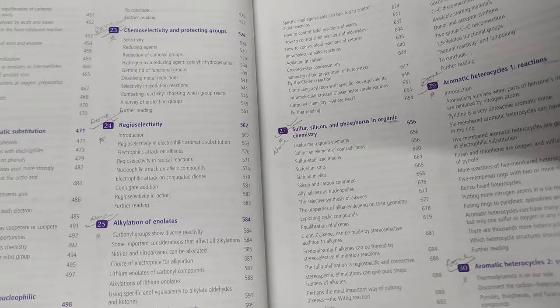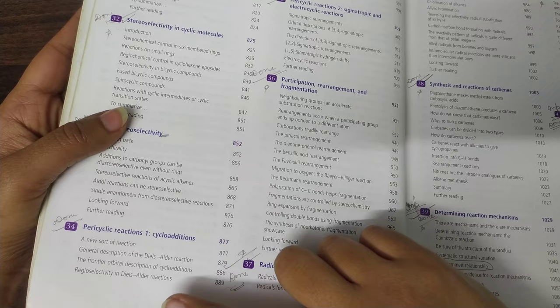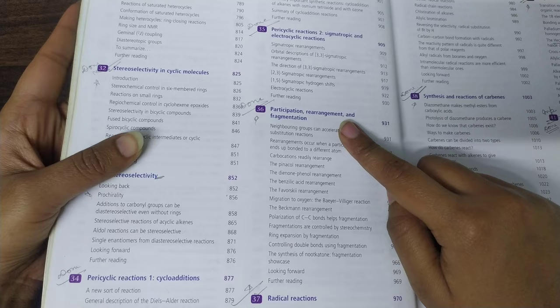Then the important chapter is pericyclic reactions - two parts, pericyclic one and pericyclic two, and after that participation, rearrangement, and fragmentation.